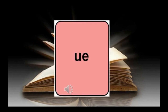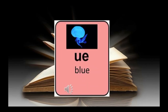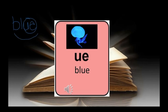The first sound we're going to look at is UE. UE, blue, OO. When I look at that word blue, I'm going to circle the UE and mark it as a double vowel sound.